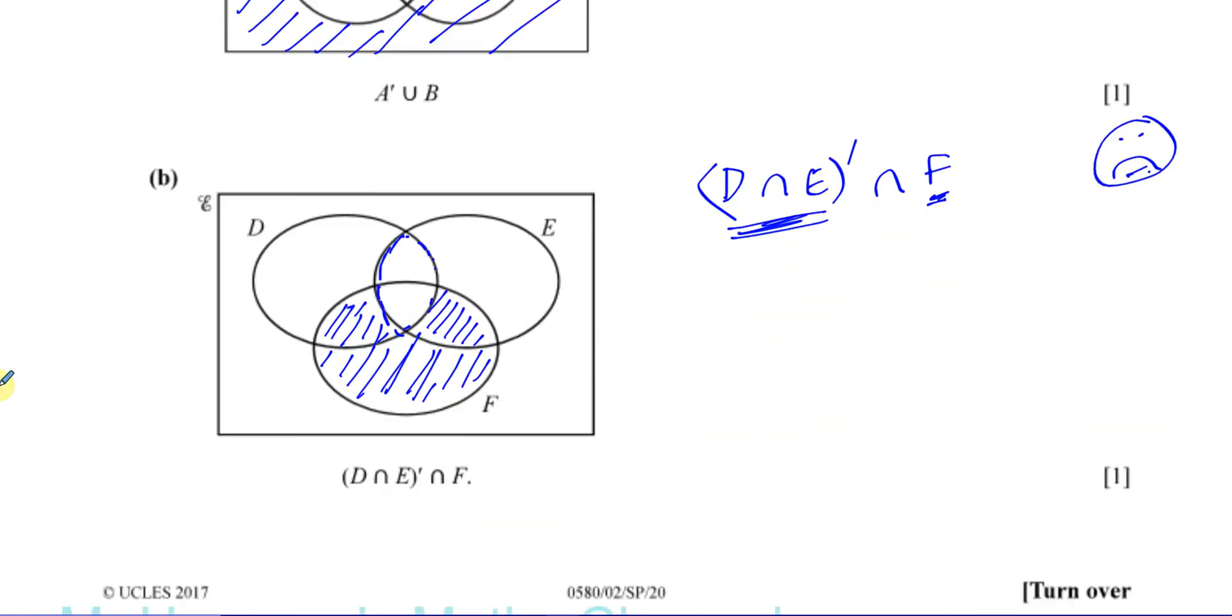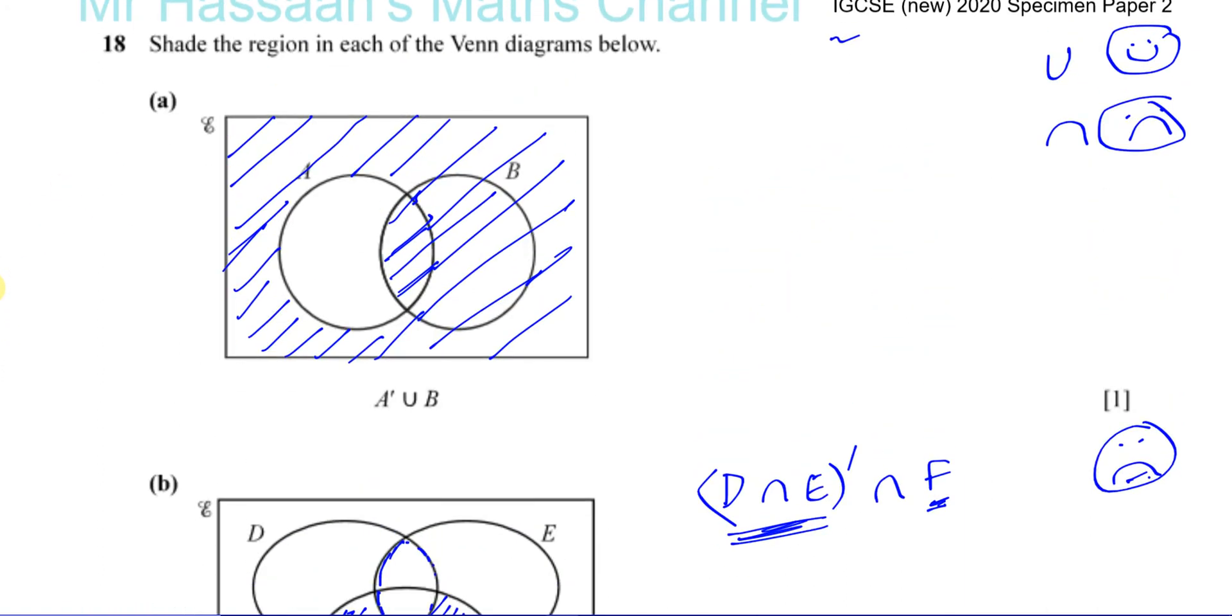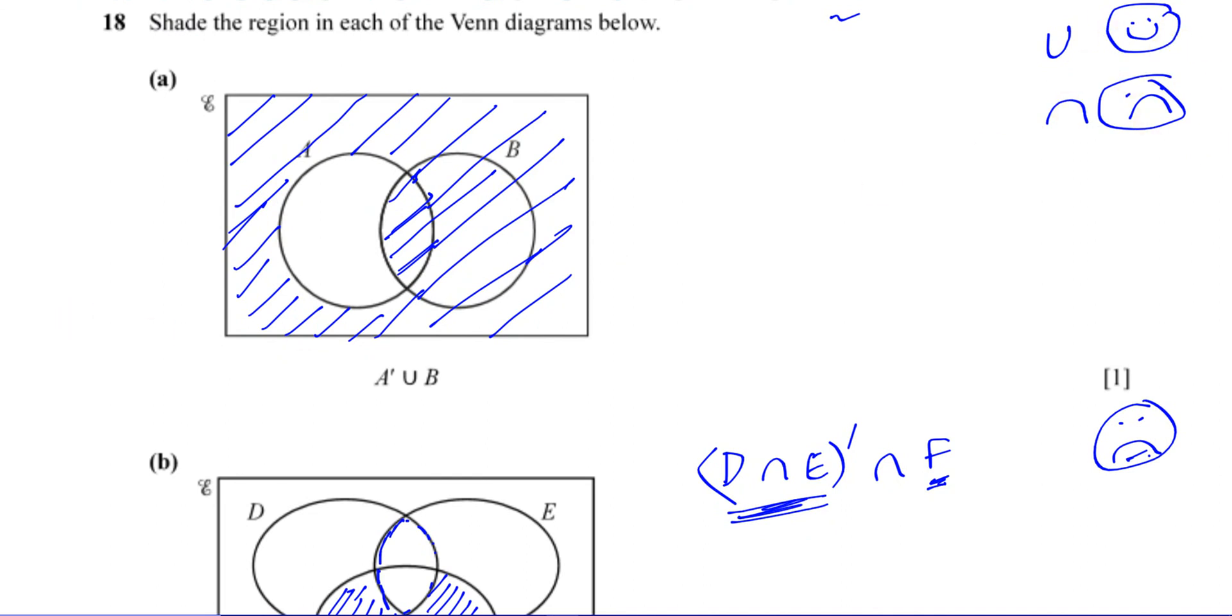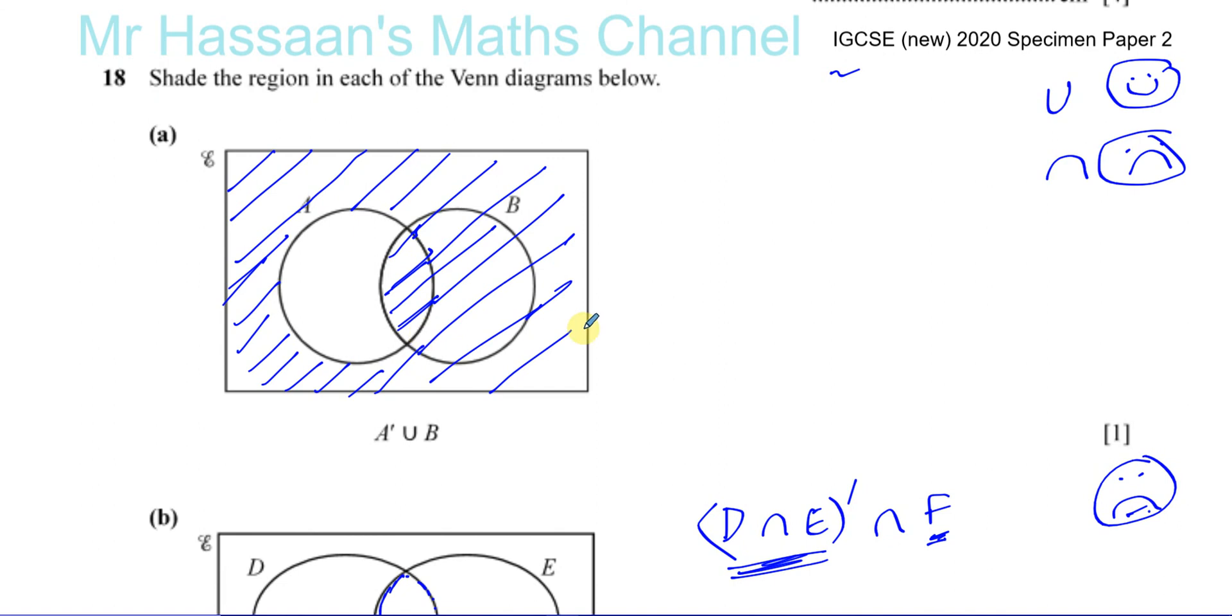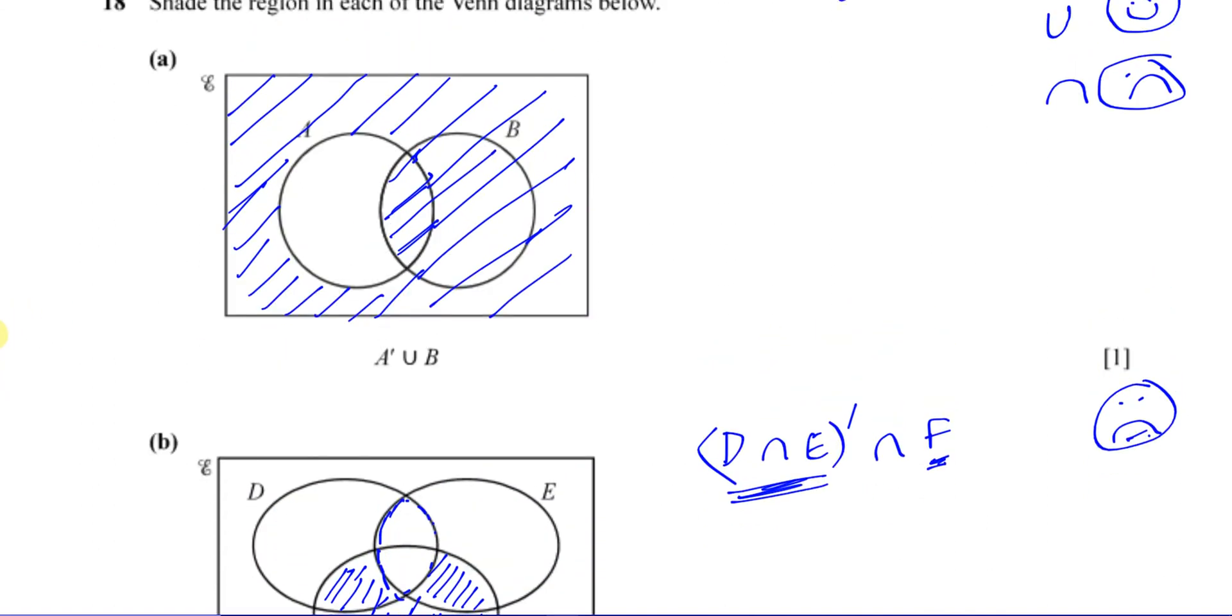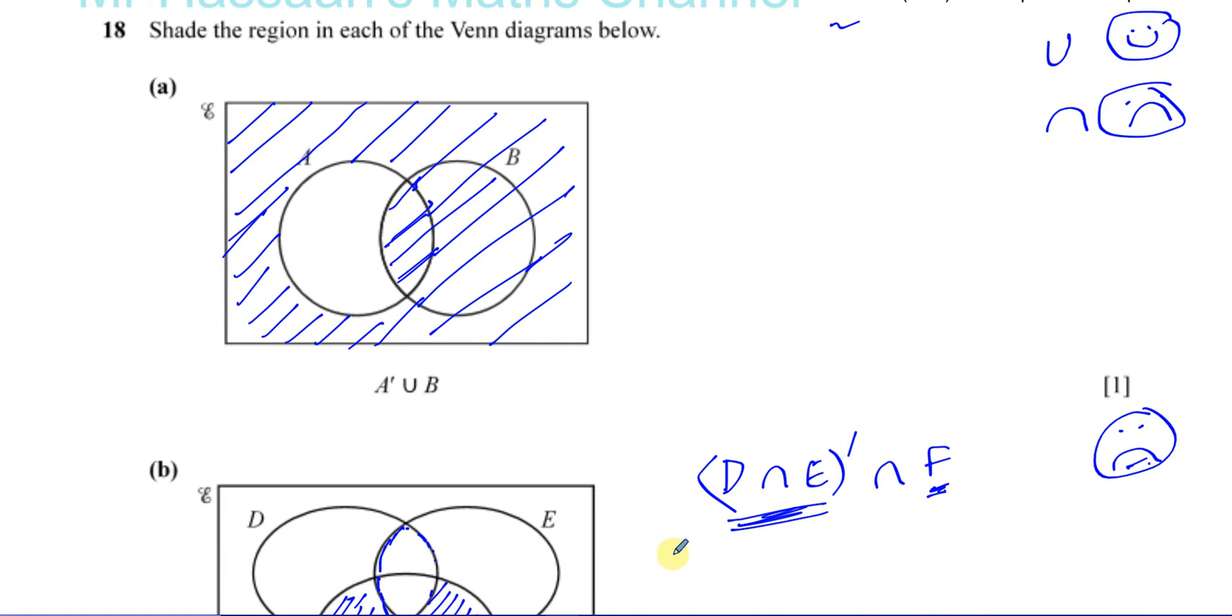I hope that was clear on this topic. So this smiley and frowny face kind of concept helps students to remember which one is which and how to deal with the shading. The rest of the questions from this paper can be found in the playlist, which is linked in the description box below. And you can go to whichever question you want to watch from there. Thank you for watching.